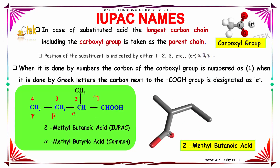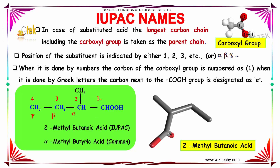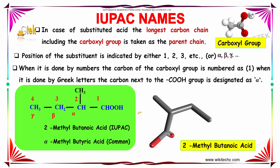In the case of substituted acids, the longest carbon chain including the carboxyl group is taken as the parent chain. The position of the substituent is indicated by either numbers 1, 2, 3 or Greek letters alpha, beta, and gamma. When done by numbers, the carbon of the carboxyl group is numbered as 1. When done by Greek letters, the carbon next to the COOH group is named as alpha.